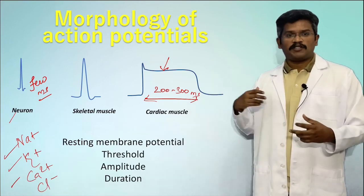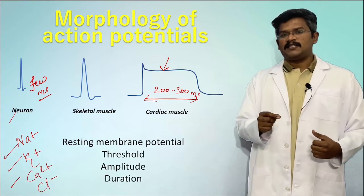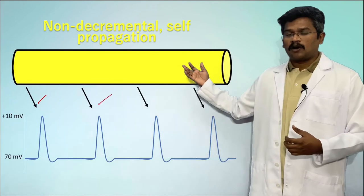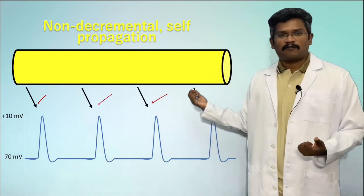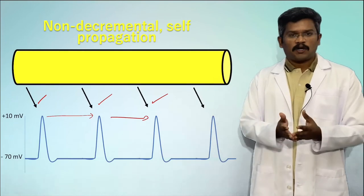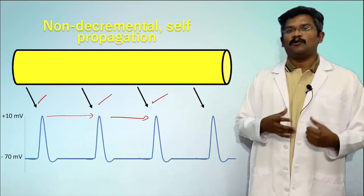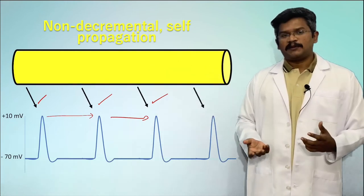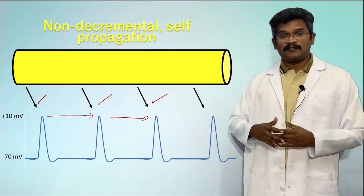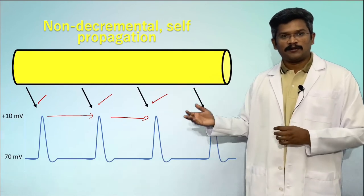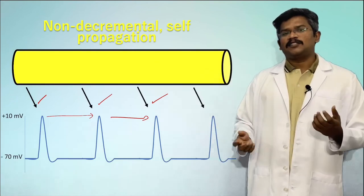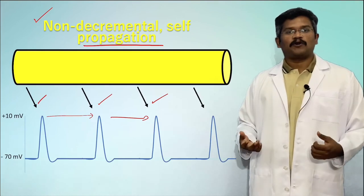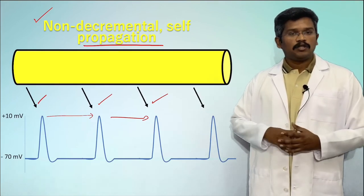Though different cells have different morphologies of action potential, a given cell has the same morphology throughout its cell membrane — wherever we record along the membrane, the action potential morphology looks similar. This is because the pattern of distribution of voltage-gated ion channels is similar throughout the membrane. The magnitude of the action potential does not change throughout the membrane; even if a neuron is a meter long, the action potential looks similar from beginning to end. This is called non-decremental self-propagation, brought about by the uniform distribution of voltage-gated ion channels throughout the cell membrane.